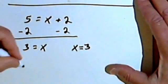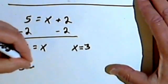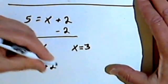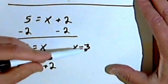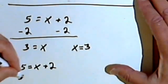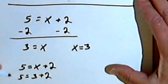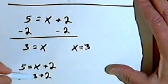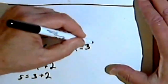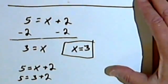Let's check the answer. So I have 5 equals x plus 2. And I'm saying that x is the same as 3. So 5 equals 3 plus 2. 5 is the same as 3 plus 2. So this answer is correct.